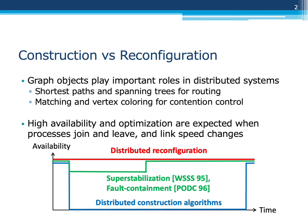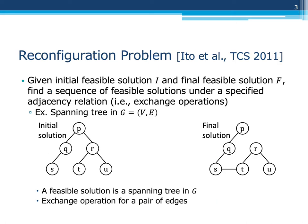Distributed reconfiguration aims at high availability to promise adaptive distributed systems. Reconfiguration problems were first introduced by Ito et al. in 2011. Given an initial feasible solution i and a final feasible solution f, it asks whether there exists a sequence of feasible solutions under a specified adjacency relation.